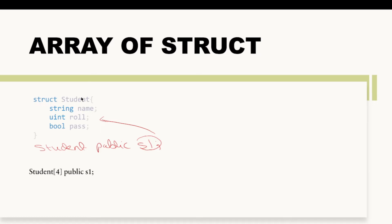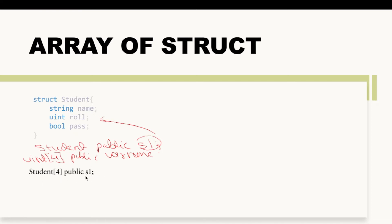To create an array of structs, we write Student — which is the data type — then, in square brackets, the number of elements, for example 4. This is because it is an array. Just like with a uint array where you write uint, then the number of elements, then public, then the variable name — in the same way I have created this Student type array which will have four elements of Student type, then public, then s1.